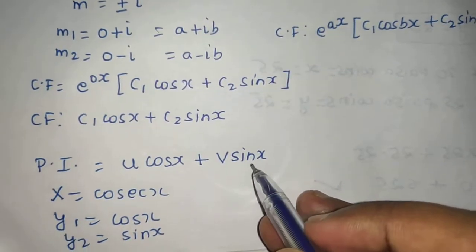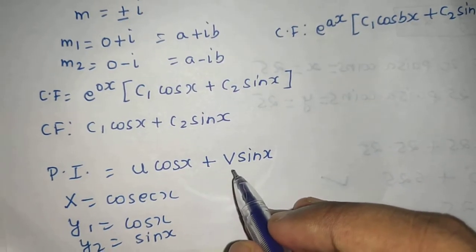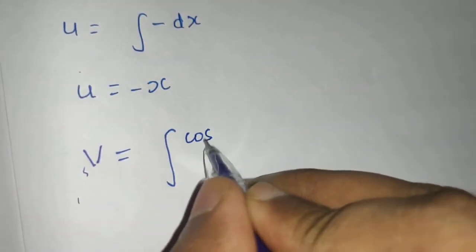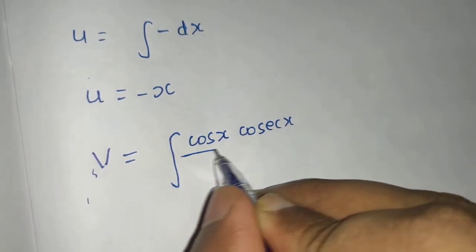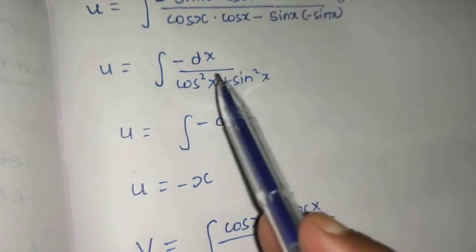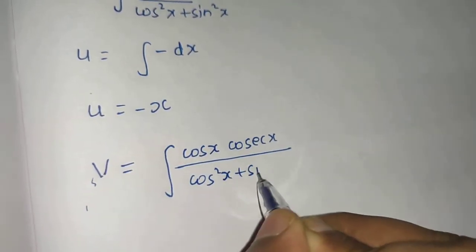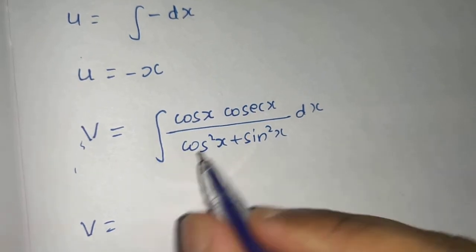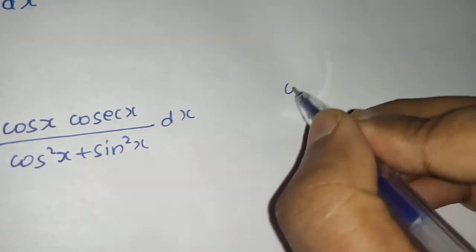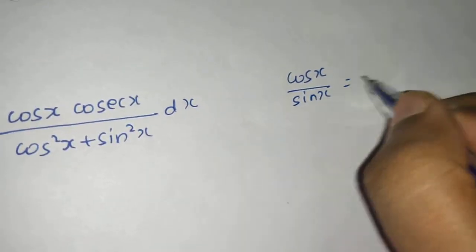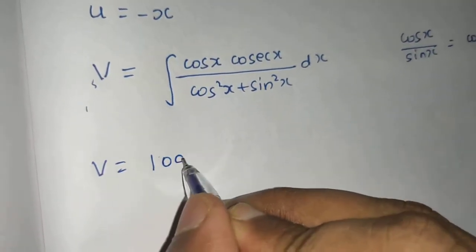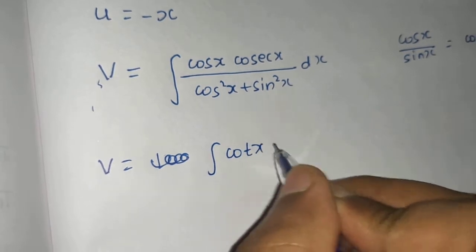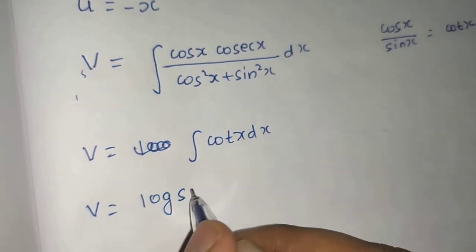Now coming to v. V equals integral of: with v you have sin x, so take the opposite — use cos x. So cos x times cosec x divided by the same denominator (cos²x + sin²x) dx. The denominator is 1, and cos x times cosec x equals cos x / sin x, which is cot x. So v equals integral of cot x dx, giving v = log(sin x).